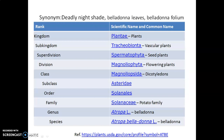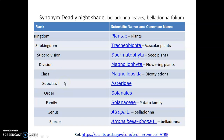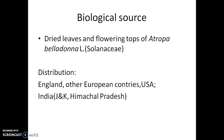The synonyms of this drug are Deadly Nightshade, Belladonna Leaves, and Belladonna Folium. The taxonomic profile: Kingdom Plantae, Sub-kingdom Tracheobionta (vascular plants), Superdivision Spermatophyta, Division Magnoliophyta, Class Magnoliopsida (dicot), Subclass Asteridae, Order Solanales, Family Solanaceae, and species Atropa belladonna L.